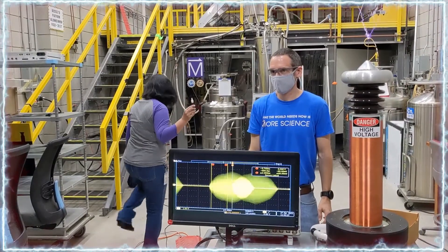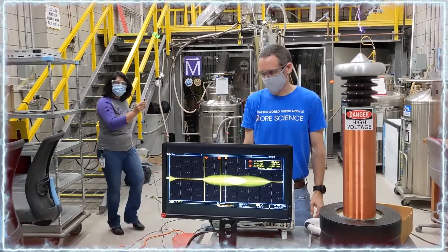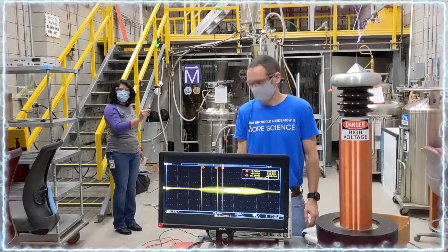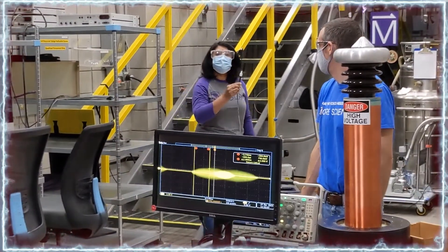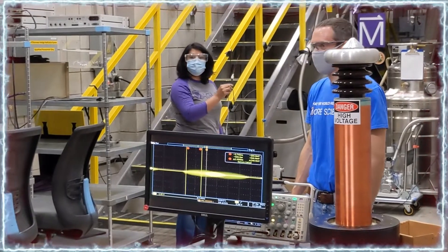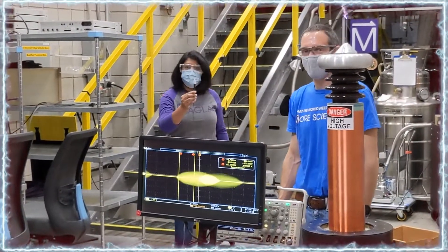The electric field created by the Tesla coil here is strong enough to survive to quite long distances. You can see the signal from the antenna on the computer screen and how it becomes weaker but still survives to distances far away from the Tesla coil.